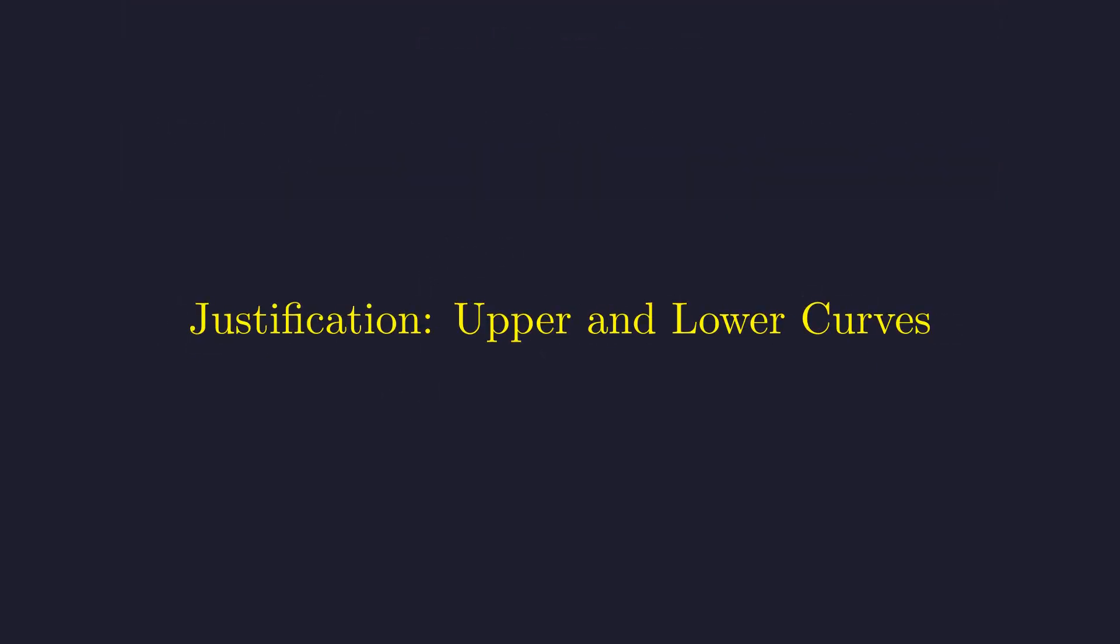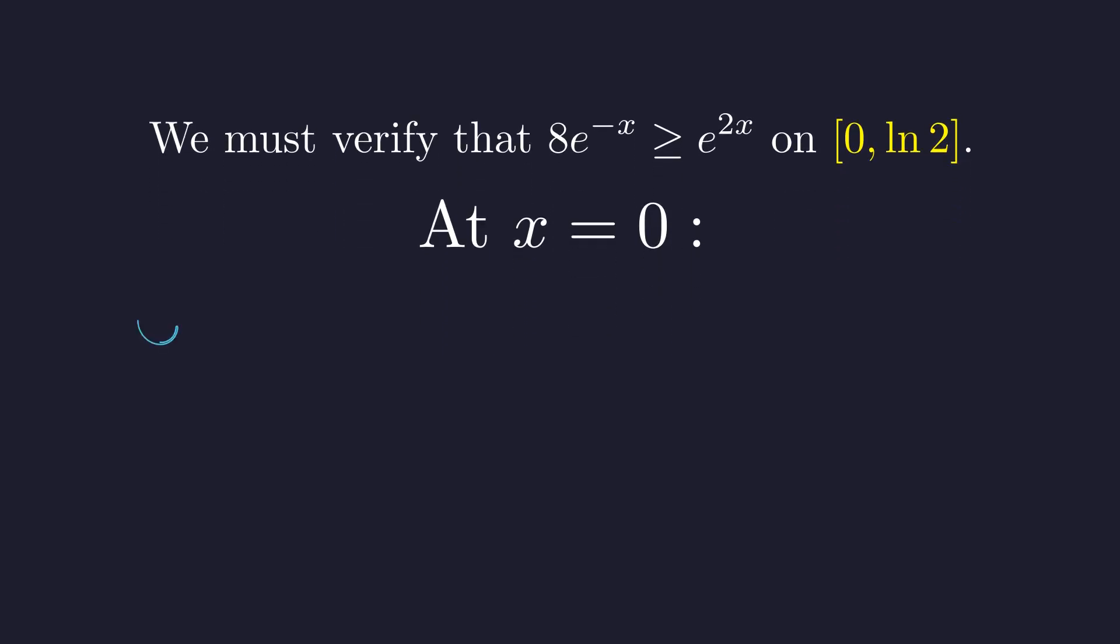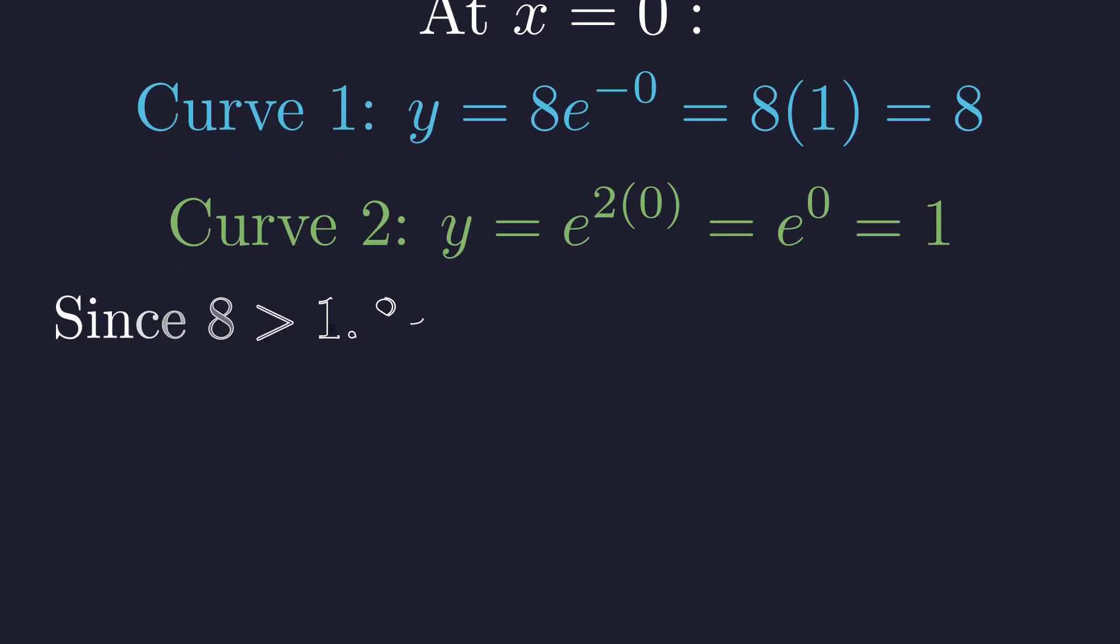Before we integrate, let's verify which function is actually on top. While the graph suggests the ordering, it's good practice to confirm that 8e to the negative x is greater than or equal to e to the 2x on our interval. A simple check is to plug in a test point from the interval. The left endpoint, x equals 0, is convenient. So at x equals 0, the first curve gives us 8. The second curve gives us 1. Since 8 is greater than 1, and the functions only meet at the right endpoint, the blue curve is indeed the upper function throughout. So our integral is set up correctly.